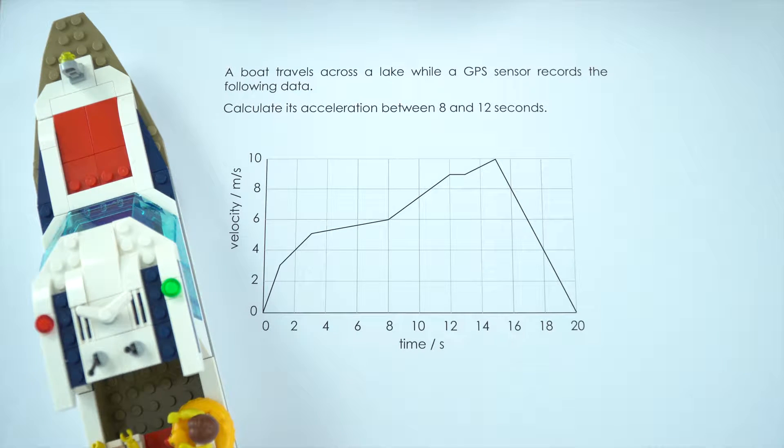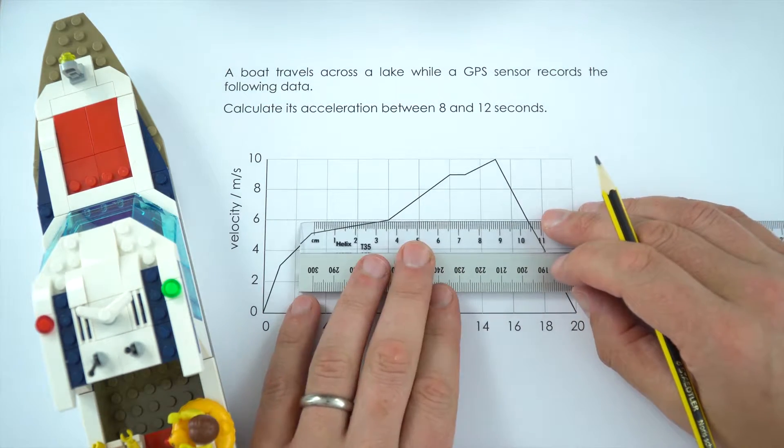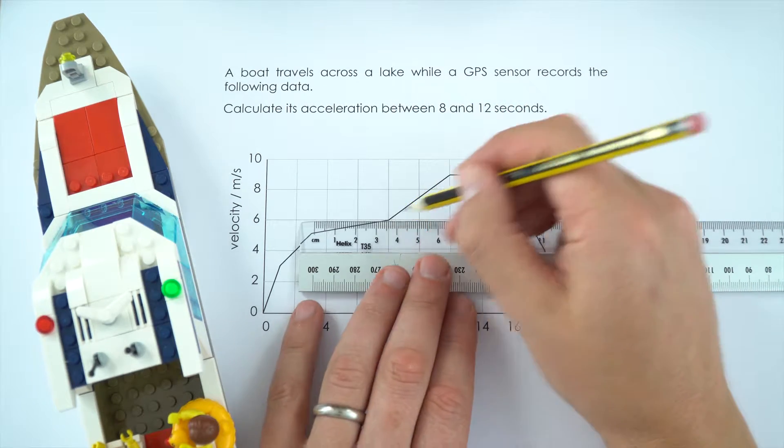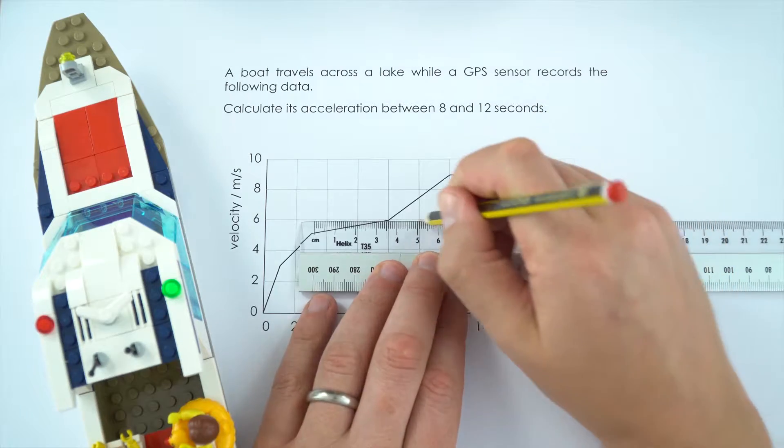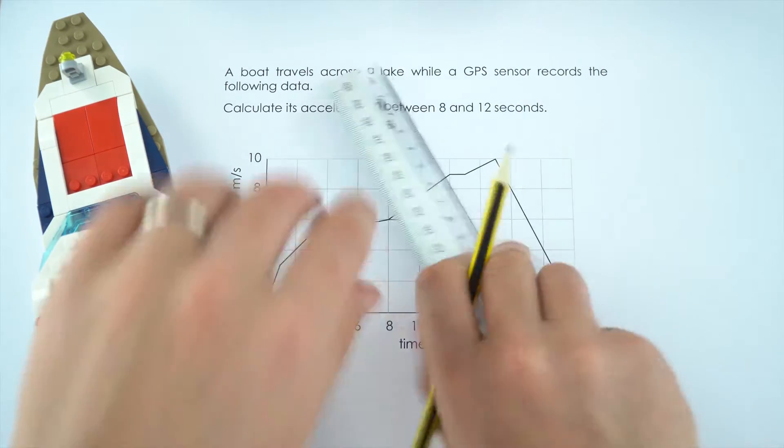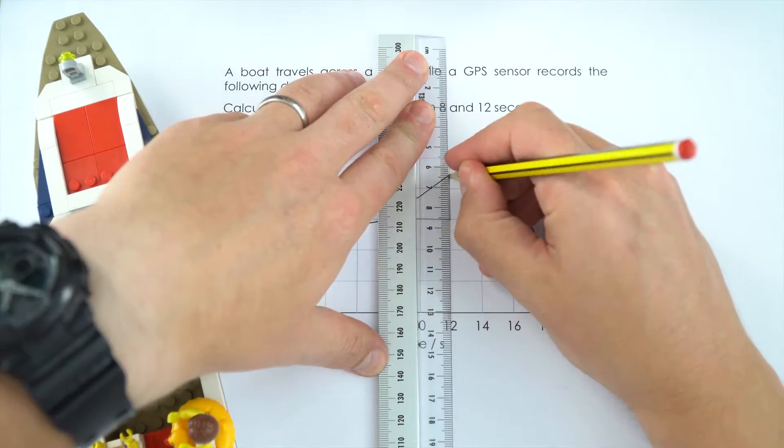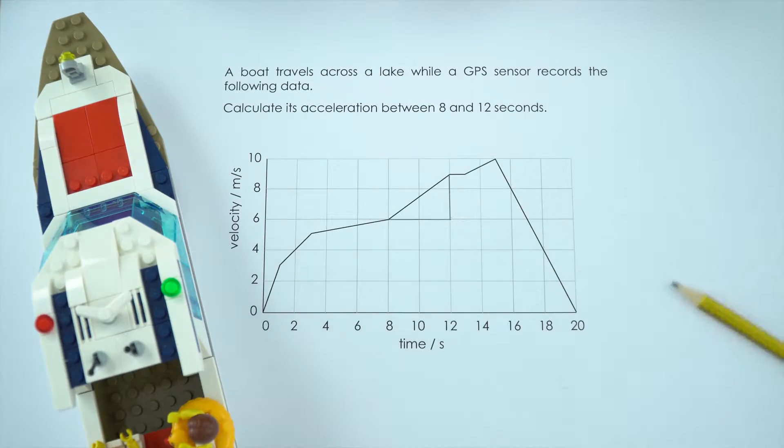Now to work out the gradient, I'm going to very carefully use my pencil and just draw on a triangle that goes between 8 and 12. So when it's at 8 we're going to start here and then we're going to finish at 12. I'll just draw that in like so, because to work out this acceleration we need to work out the gradient, and it's always a really good idea to just draw on a triangle over the point that you're drawing that gradient.